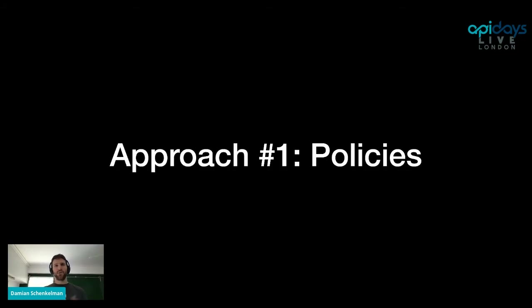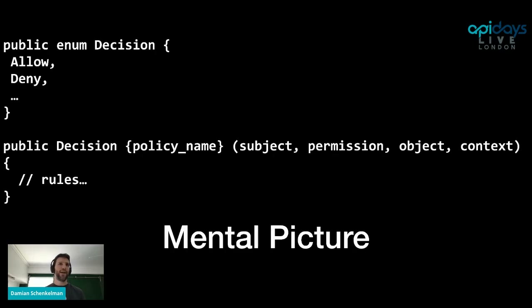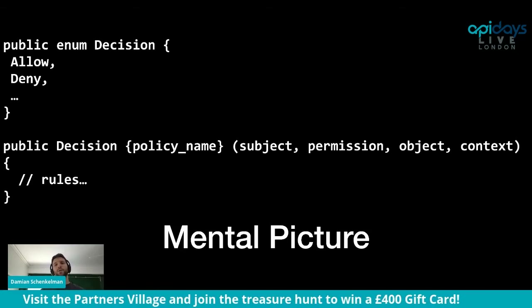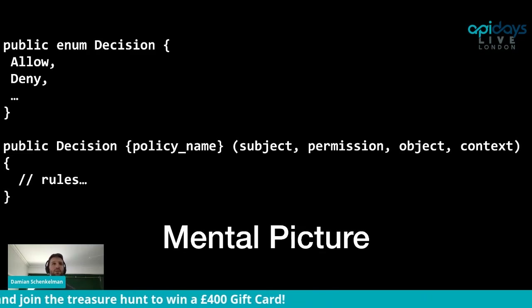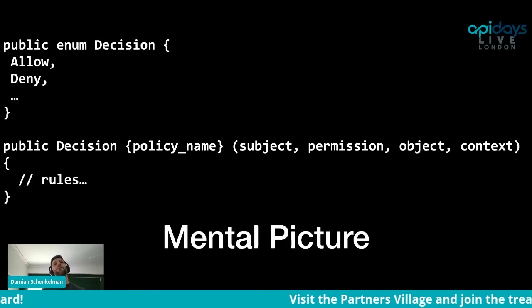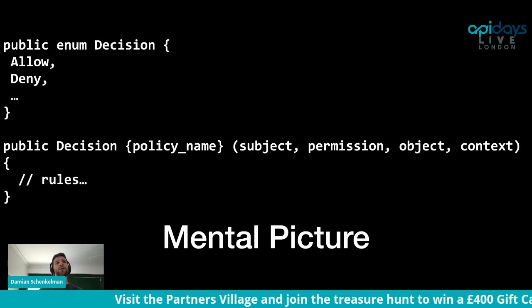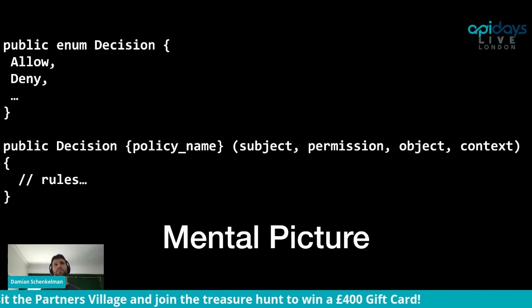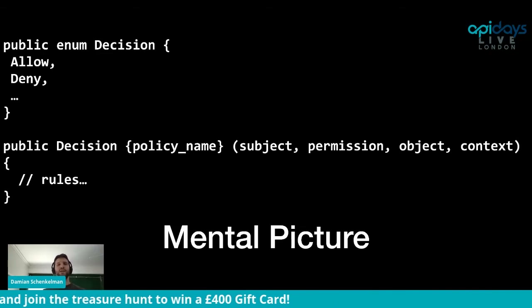The state of the industry before this type of thinking involves authorization policies. A policy is a function — it takes a set of parameters: the subject, the permission, the object, and some request context. It runs a set of rules defined by your business, product team, or engineering team about who can perform a particular action. For example, the policy might be 'who can delete customers?' and it returns a decision — either allow or deny.